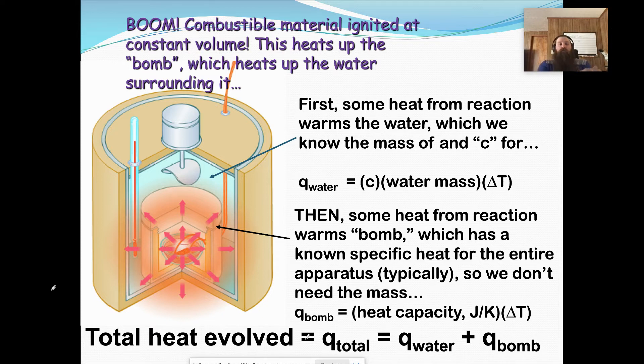So once that substance is ignited, we use this formula, Q equals MC delta T. We've just written it a little different here, CM delta T. And this tells us how much energy is in the water.